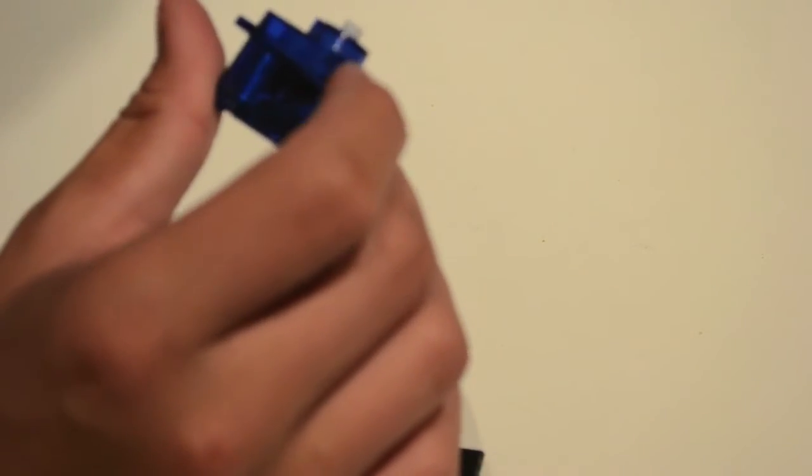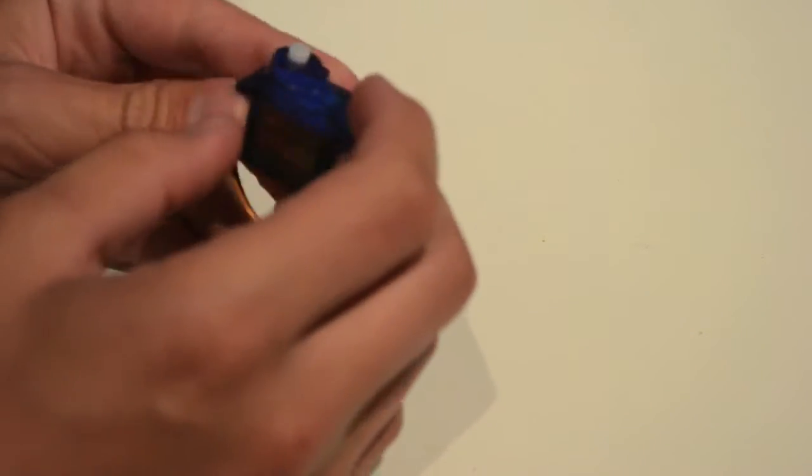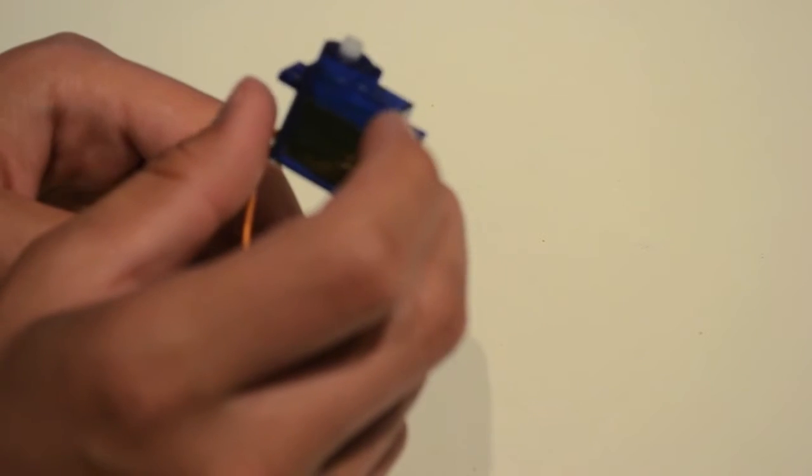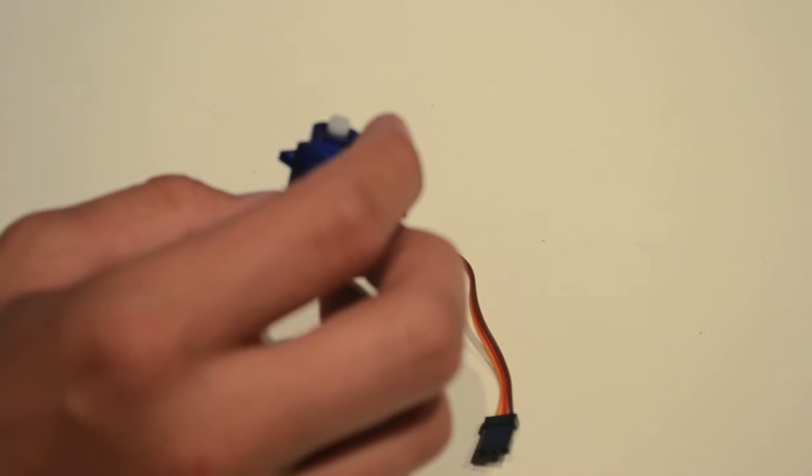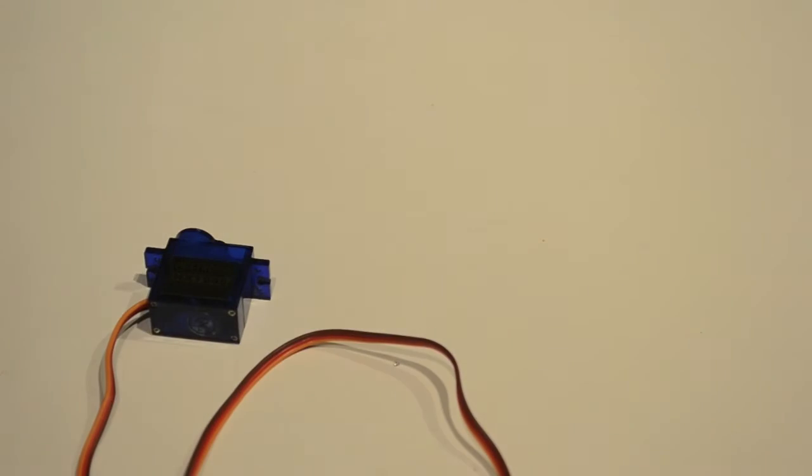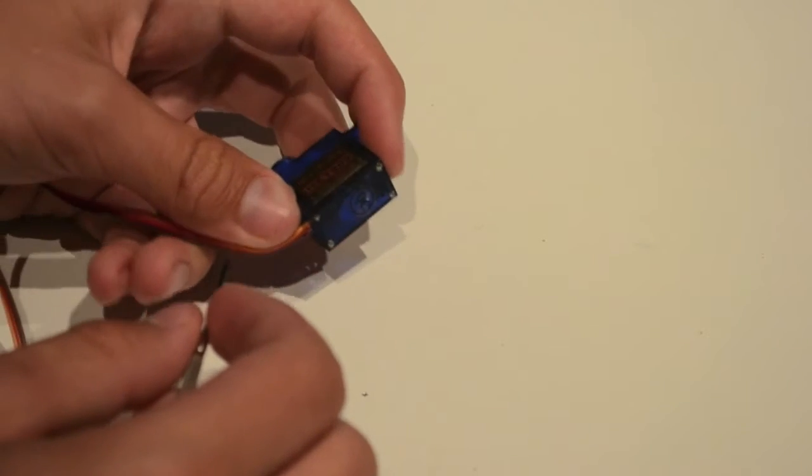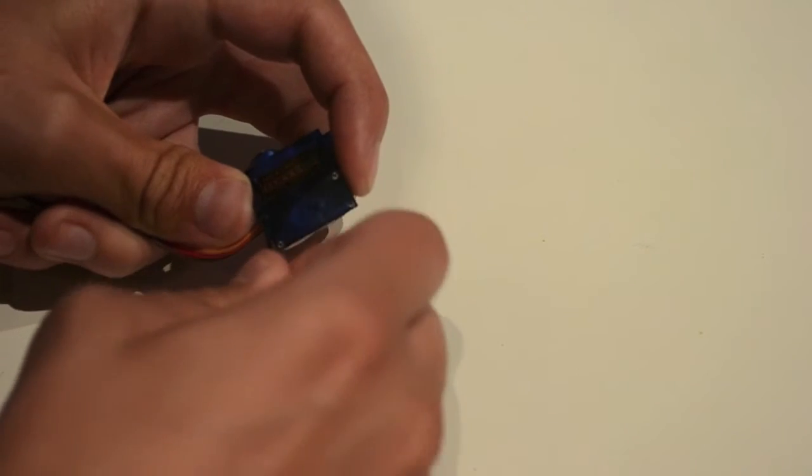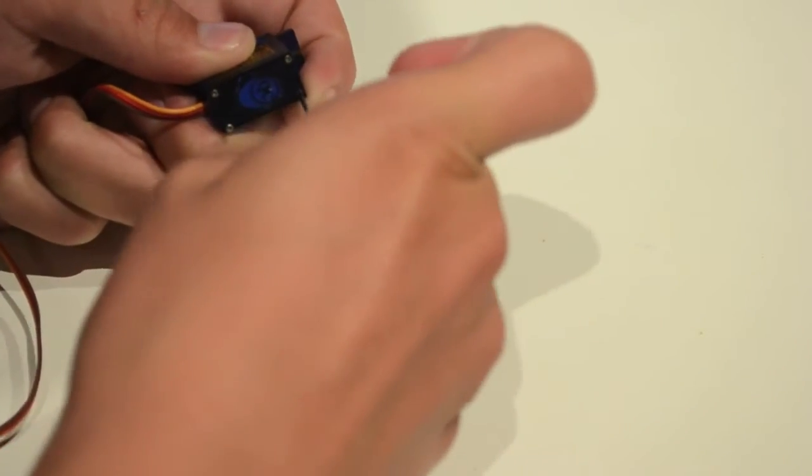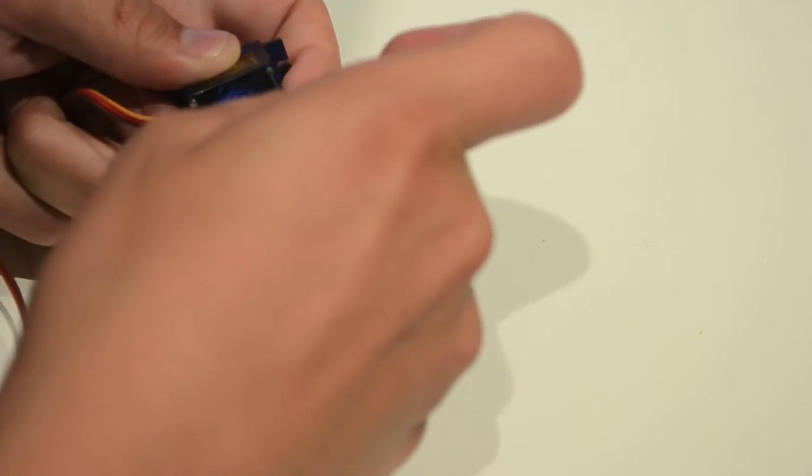The first thing we are going to do is take this servo apart. That is about the simplest step that we are going to do. We are going to take a small screwdriver because it has some very small screws. Then we are going to unscrew. When you have unscrewed the four screws that hold the servo together.